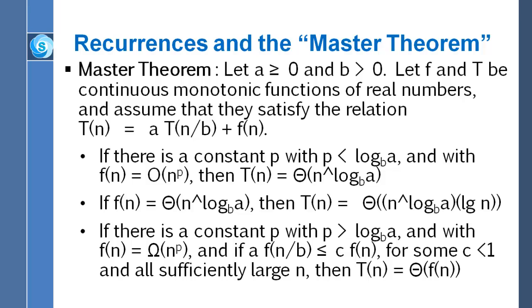The last case is a little bit trickier. It asserts that if there's a constant p that is greater than the base b log of a, with f of n equal to capital omega of n to the p, and if little f of n over b is less than or equal to c times little f of n, for some constant c less than 1, and for all sufficiently large n, then it follows that capital T of n is equal to capital theta of f of n.